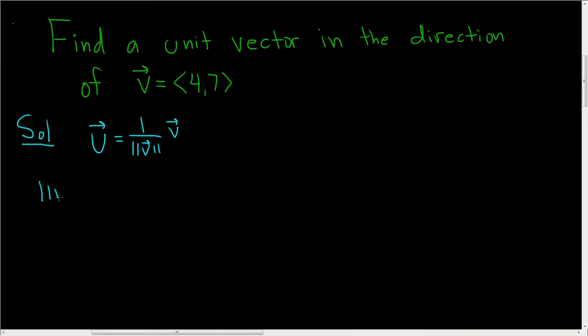So in this case, the magnitude of v, it's the square root of, well, you square the first component, so 4 squared.